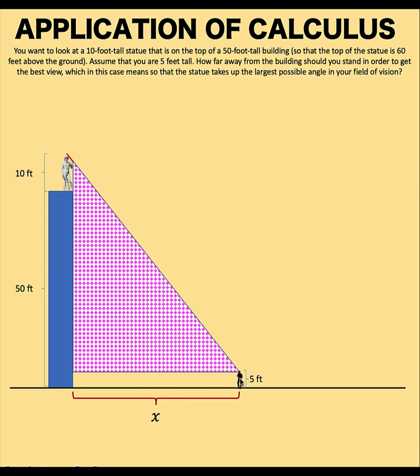Now, to find your angle of elevation, that angle should be the inverse tangent of the opposite side, which is 55 feet, and the adjacent side, which is x feet. So here is the expression for your angle of elevation.